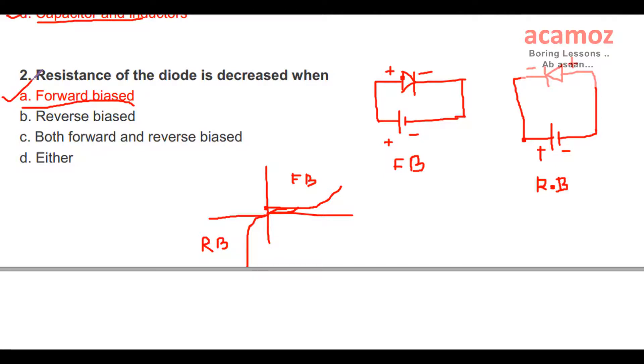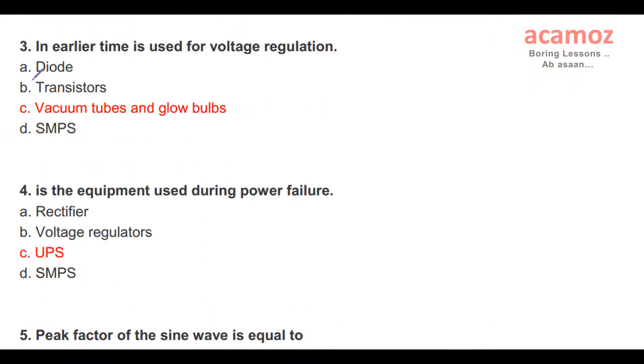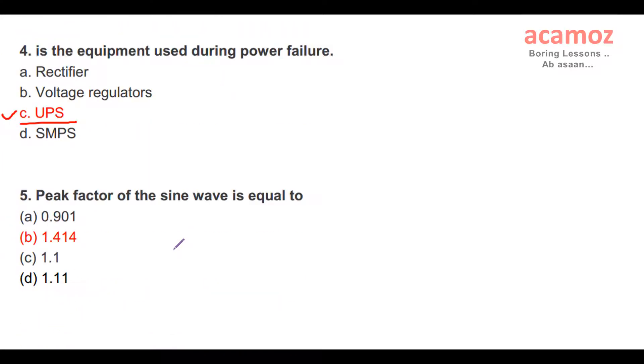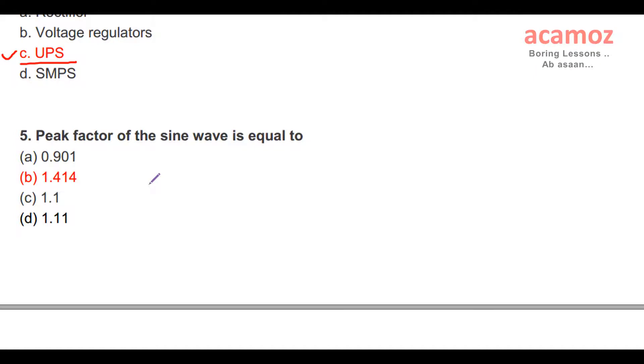Third question: In earlier time, for voltage regulation purpose, vacuum tube and glow bulbs were used. After that, many improvements and innovations happened, and new devices are used like diodes. Fourth question: Equipment used during power failure - we know UPS, uninterrupted power supply, is used.